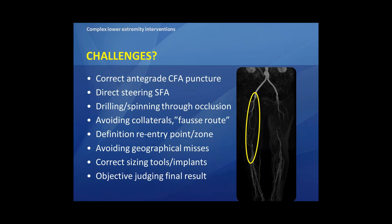Let's go a little bit more into detail. You see one of my daily challenging cases: a long SFA occlusion. What we want to do, supported by our Discovery machine and advanced imaging tools, is first of all a correct antegrade common femoral artery puncture, then steer directly into the SFA, drill and spin through the occlusion, and of course avoid false routes or collaterals in order to avoid perforations.